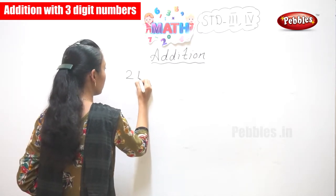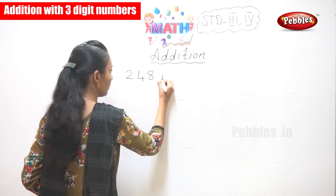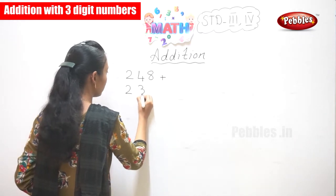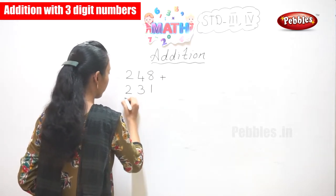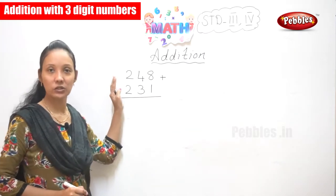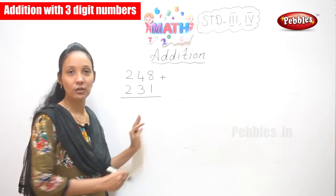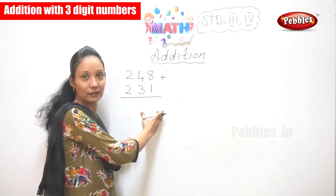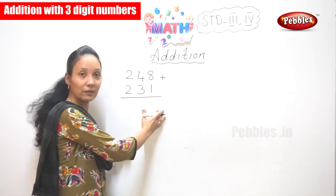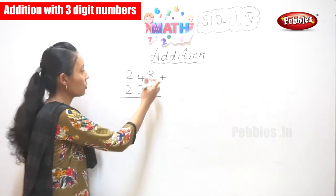So, 2-4-8 plus 2-3-8. Okay, so you have your 3-digits. You always should start your addition from your right side.